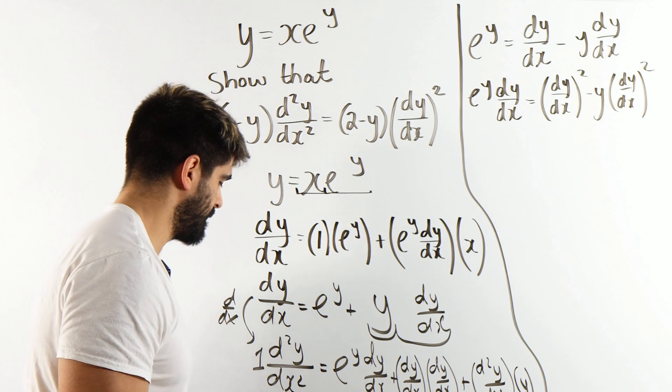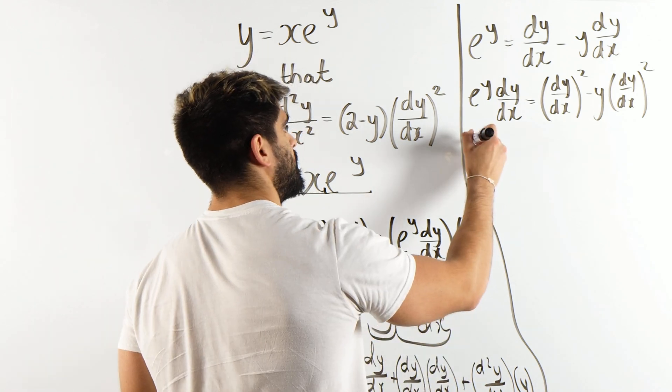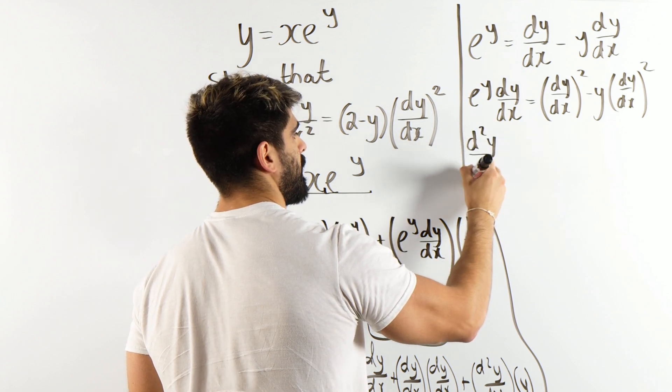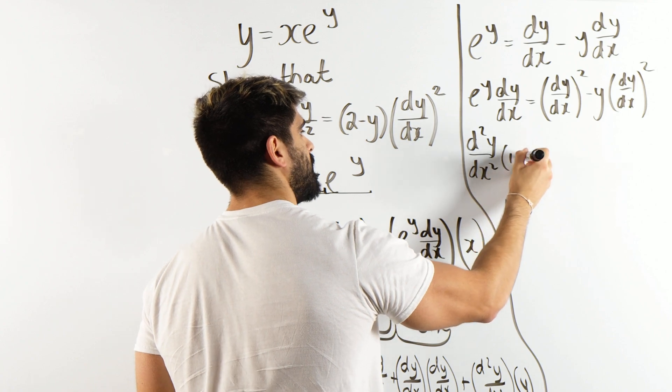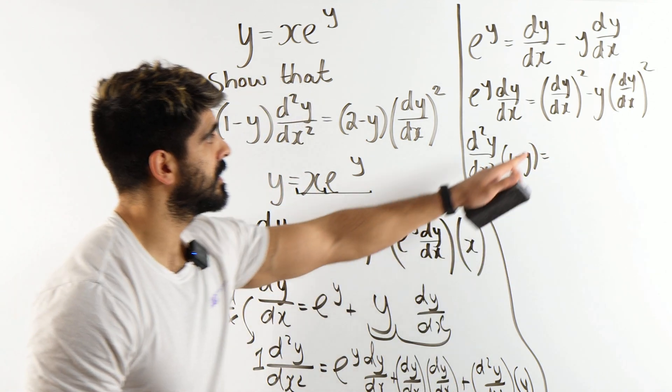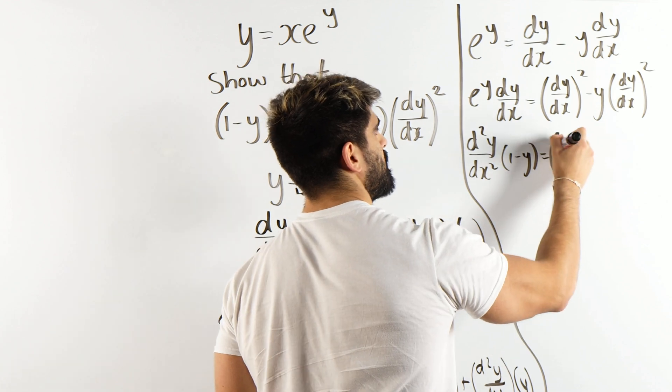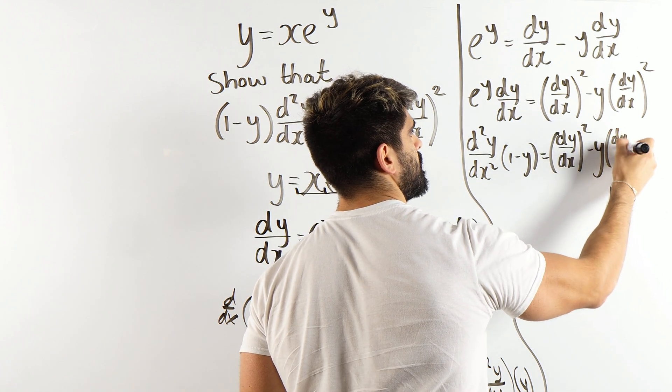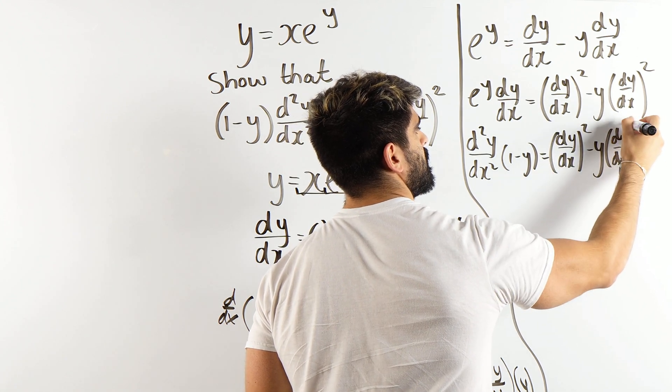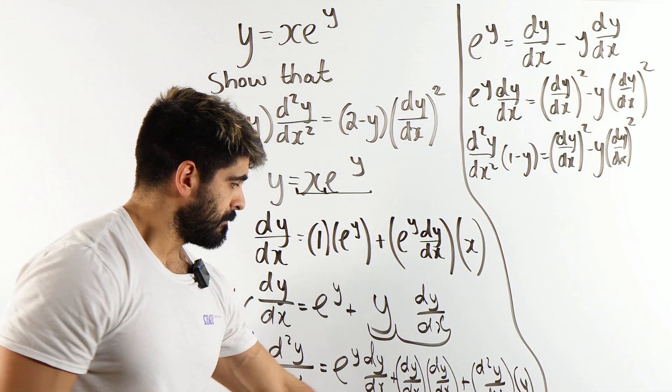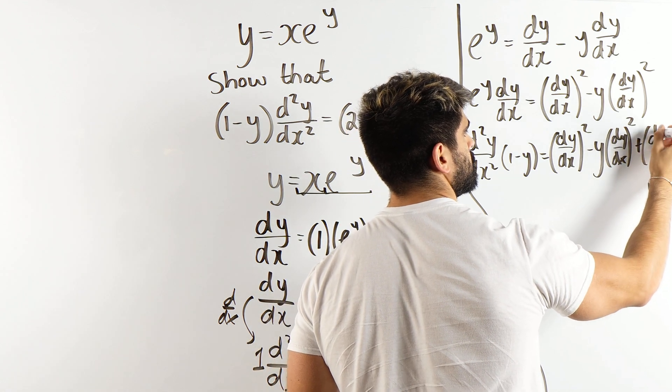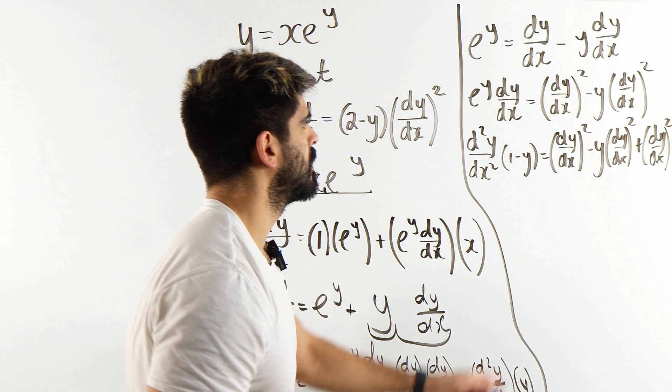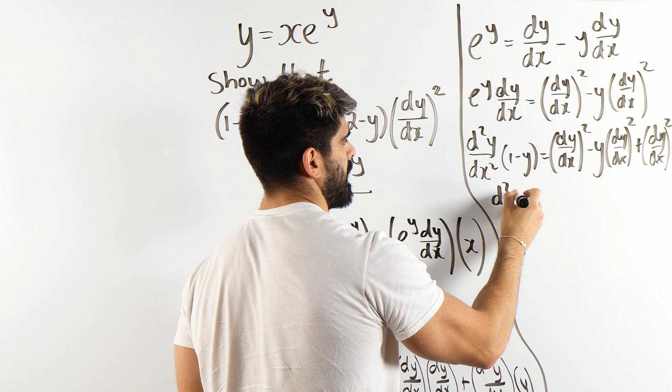Yes mate, it's looking like it's appearing. So I'm going to get d²y/dx² (1 minus y) - is this, which is this. I'm just going to be very explicit with my working - minus y(dy/dx)² plus that final one, plus that final one.